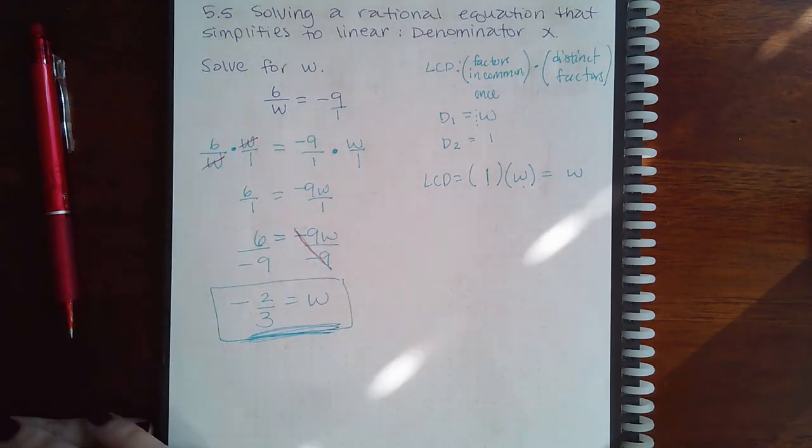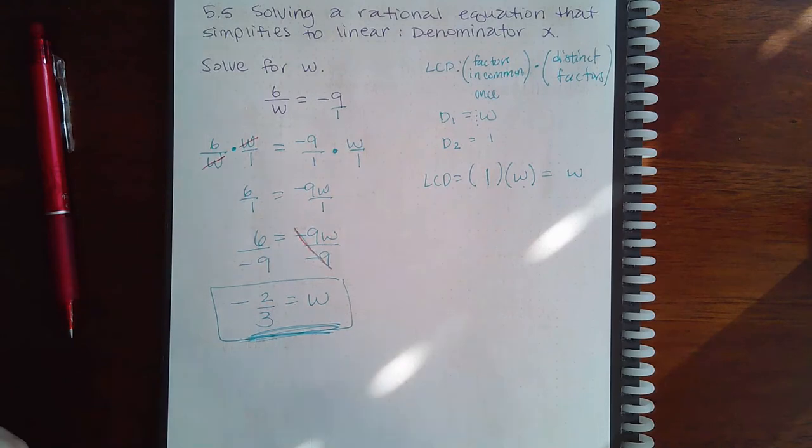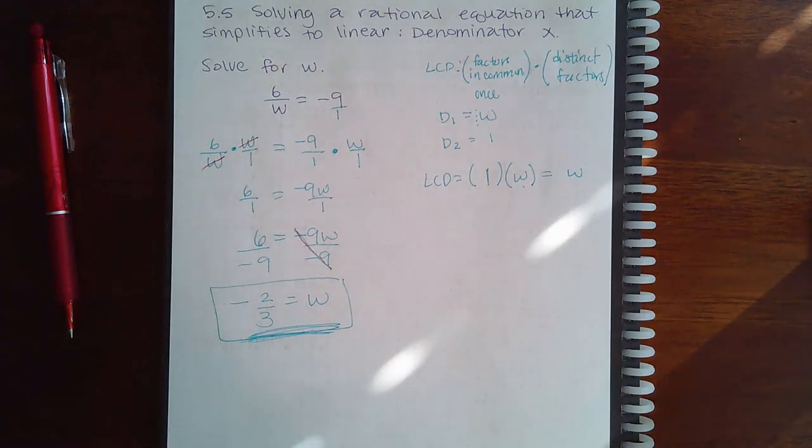And so in ALEKS, my answer would be negative 2 thirds. I only mention this because as we get deeper and deeper into solving rational equations, there may be times in the future where we do find out that our solution, although it was found correctly, may not actually be a solution at all.